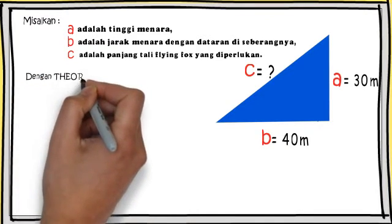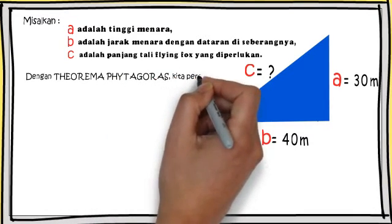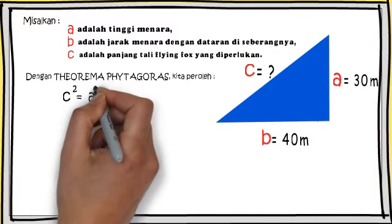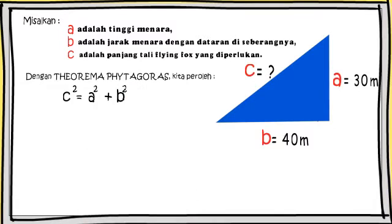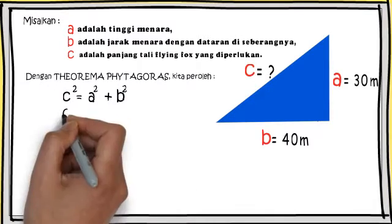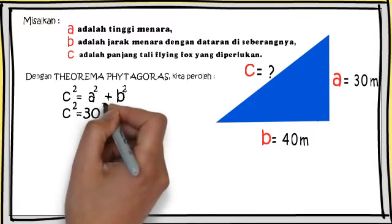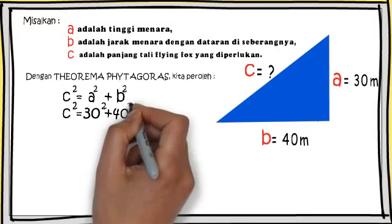Dengan menggunakan teorema Pitagoras, kita peroleh C kuadrat sama dengan A kuadrat plus B kuadrat. Sekarang kita substitusikan angka-angka yang telah kita punya, yaitu C kuadrat sama dengan 30 kuadrat plus 40 kuadrat.